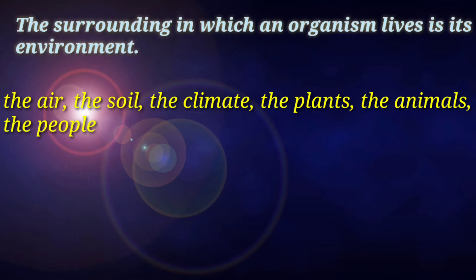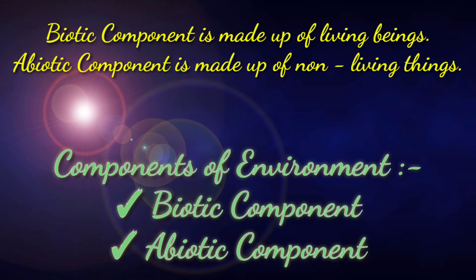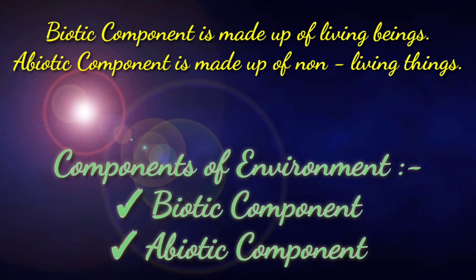It also includes the people around a person and the interaction of the person with these people. The components of environment are the biotic component and abiotic component. The biotic component is made up of living beings — all the plants, animals and microorganisms. Whereas the abiotic component is made up of non-living things such as air, water, soil and light.